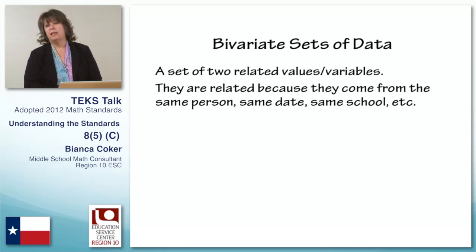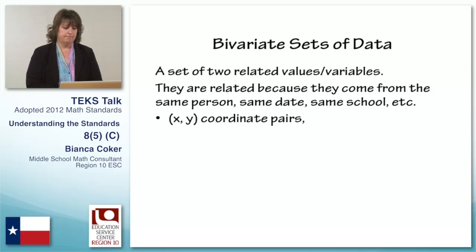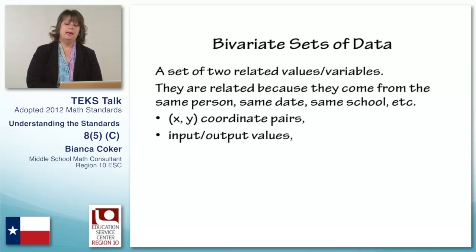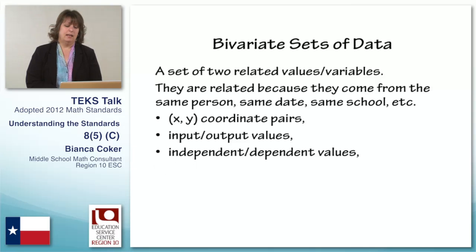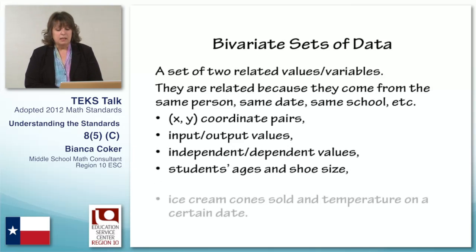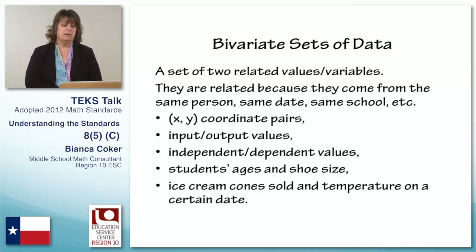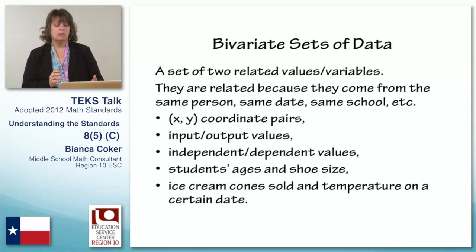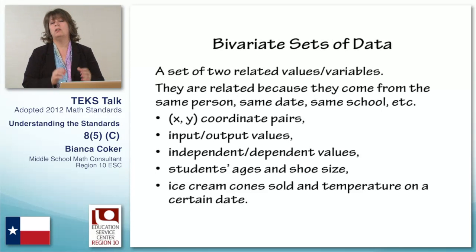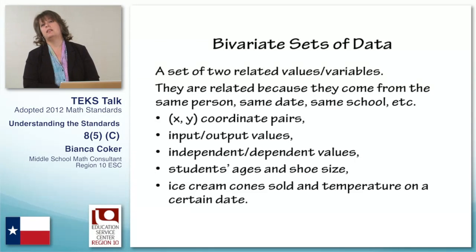A lot of times they're related by date or person. For example, an x-y coordinate pair is a bivariate set of data. Input-output values, independent-dependent values, students' ages and shoe sizes, ice cream cones sold and temperature on a certain date — those are all bivariate sets of data.